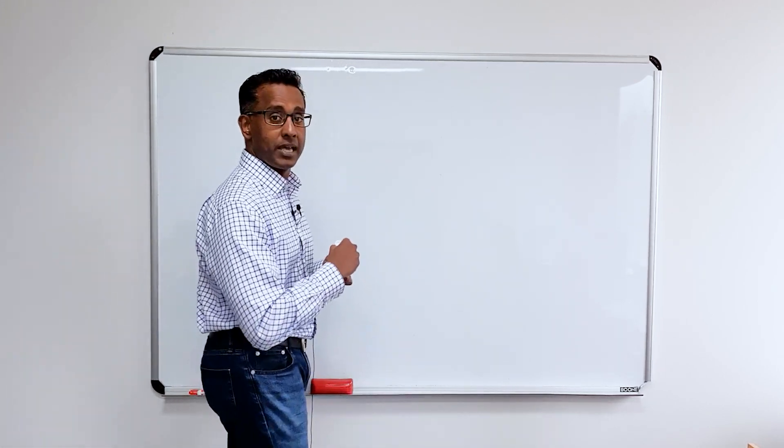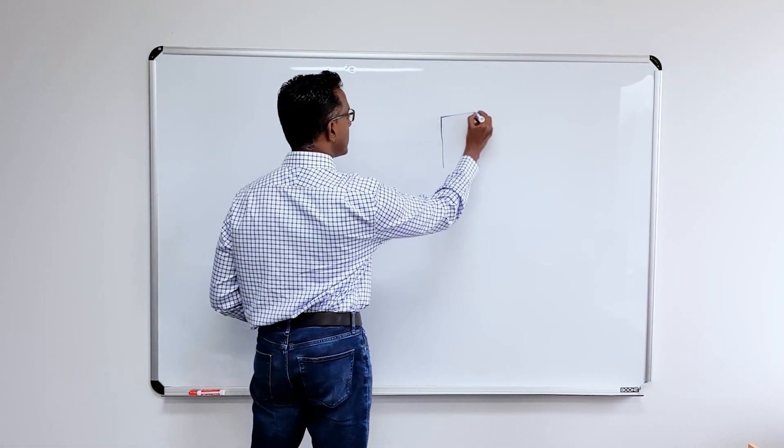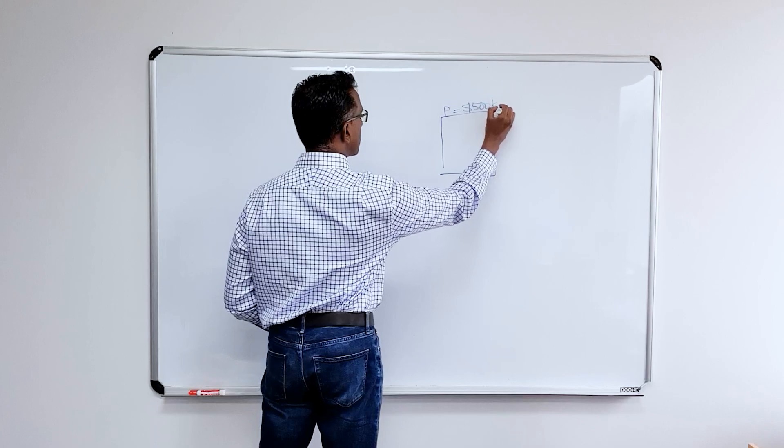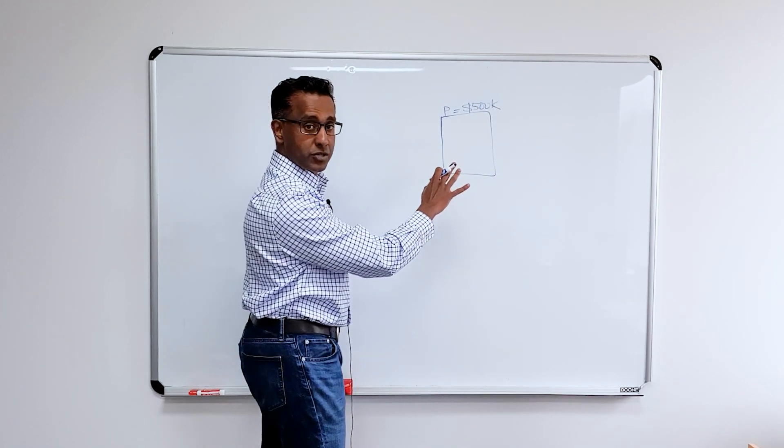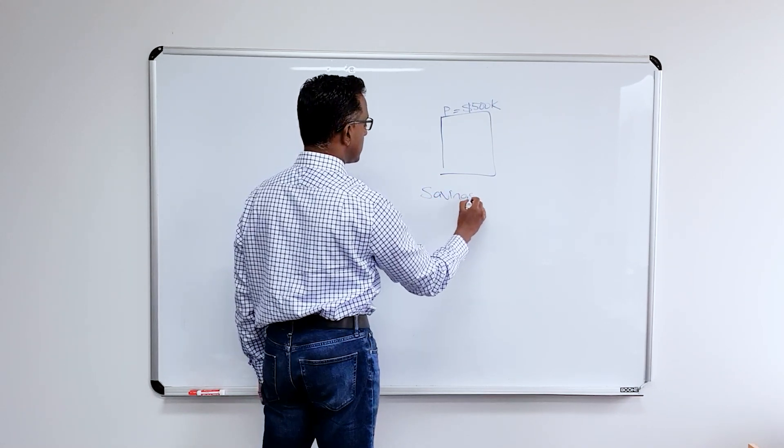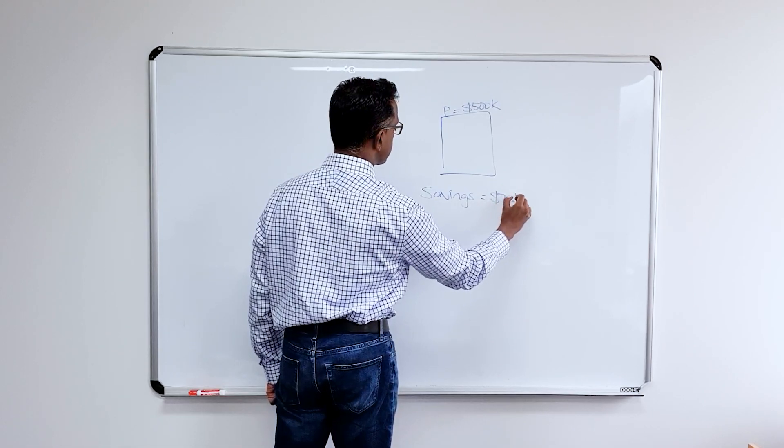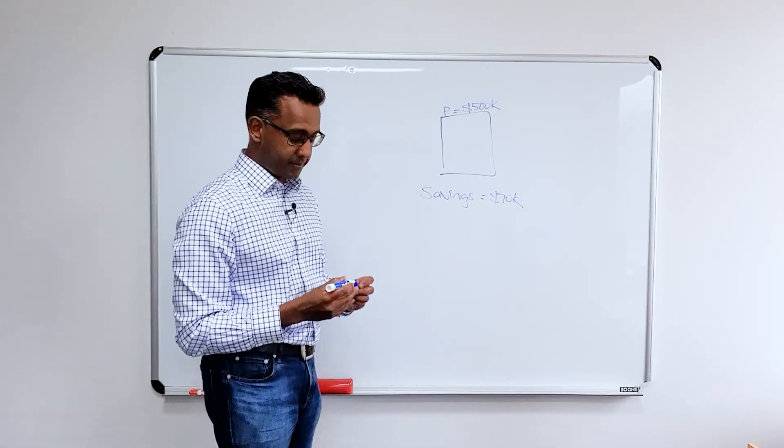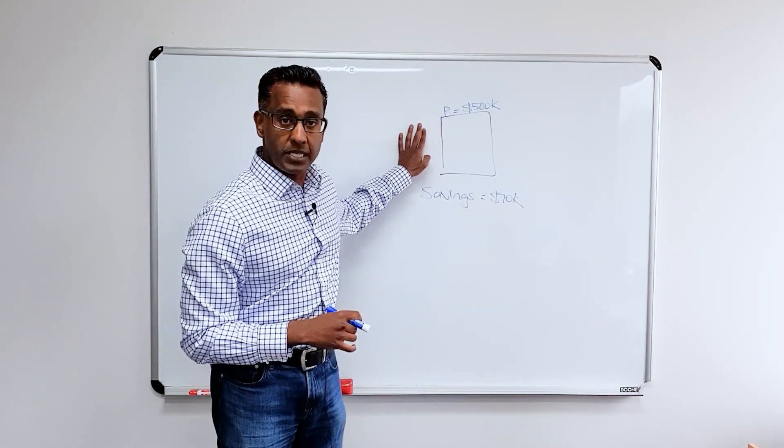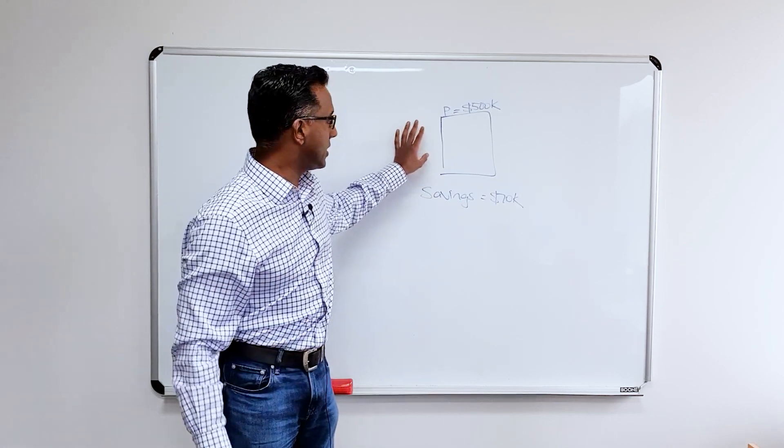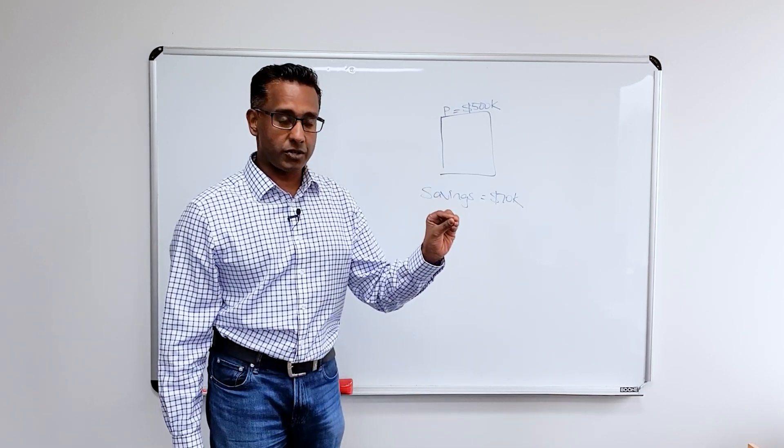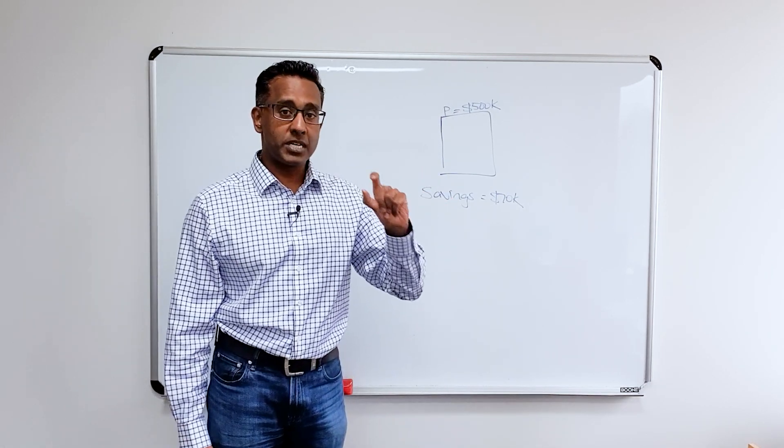And let's look at a few scenarios. Scenario number one. Let's say, for example, you're looking to buy an investment property, purchase price is $500,000. Say you have in savings $70,000. Now, if you wanted to borrow 80% on this property so that you didn't have to pay Loan Mortgage Insurance, you would then have to take out a loan of 80% of $500,000, which is $400,000, and then you'd have to come up with a 20% deposit, which is 100 grand.